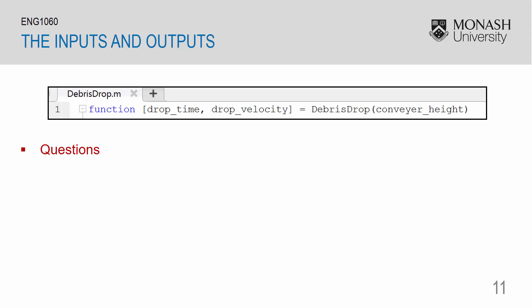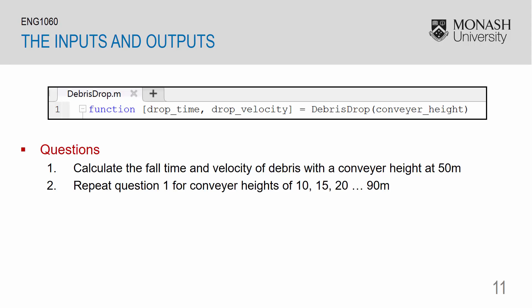So we're posed with the following questions now that we have created our function file. One, calculate the fall time and velocity of debris with a conveyor height of 50 meters. Secondly, repeat question one for several conveyor heights of 10, 15, 20, all the way up to 90 meters. And third, what happens if the following command is executed? X equals DebrisDrop(B).